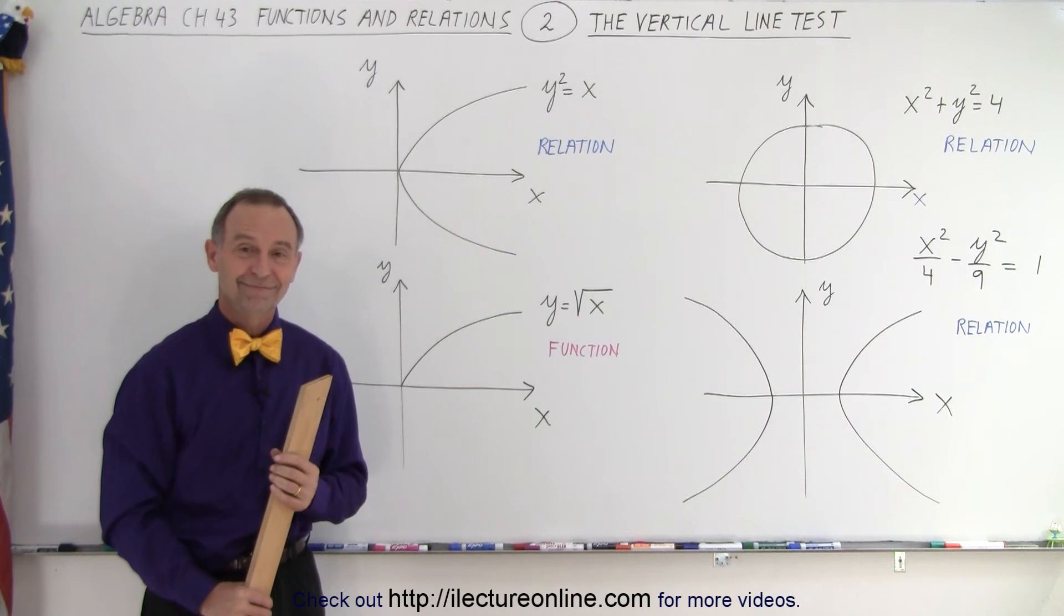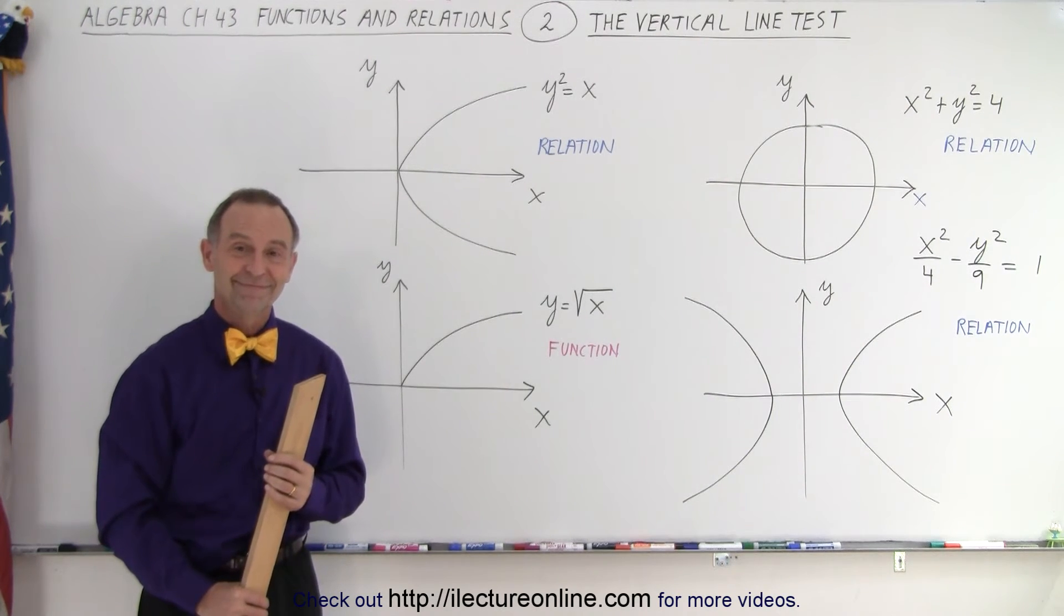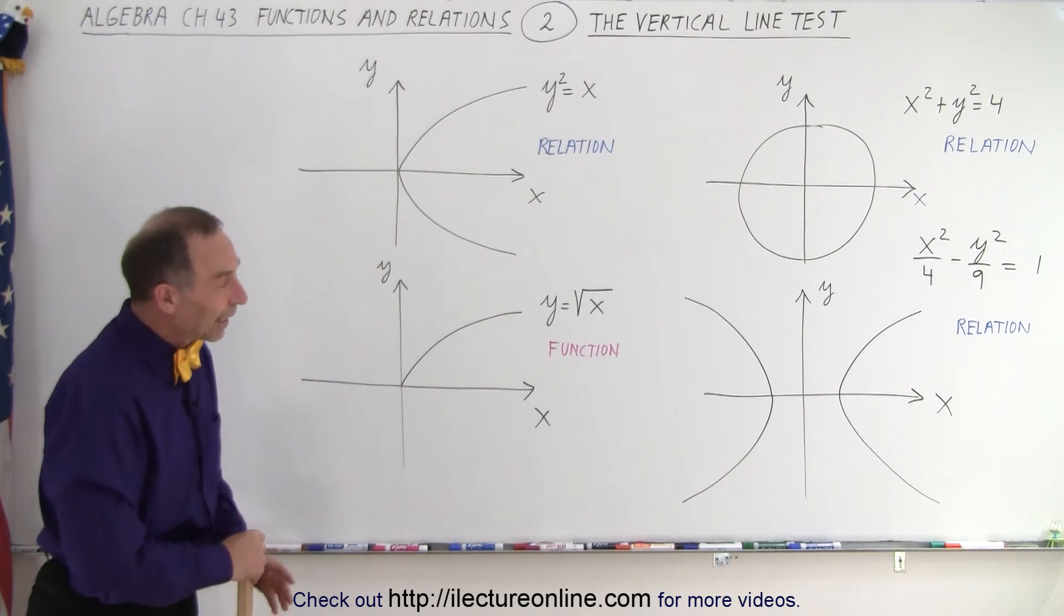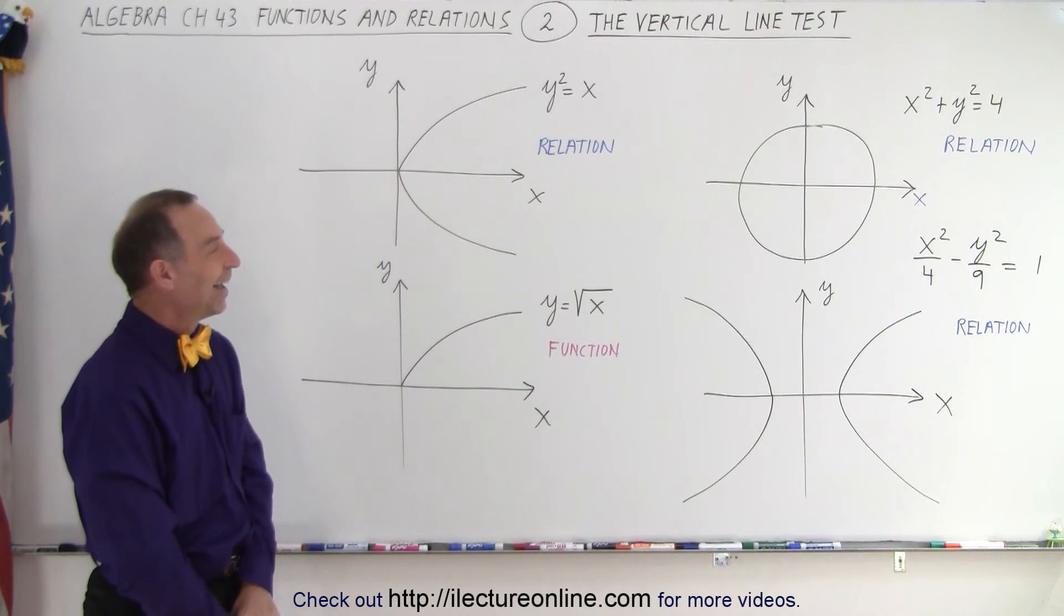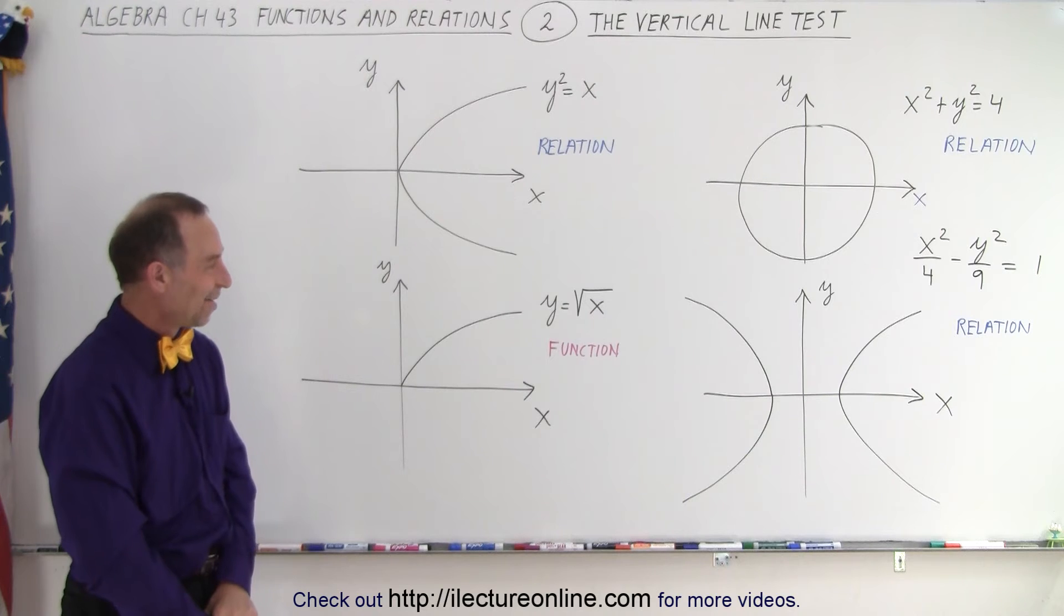Does it really matter? I mean, what's so special about relationships and functions? Yeah, so one doesn't pass the vertical line test, the other one does. So?